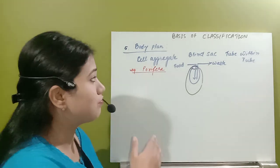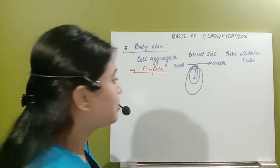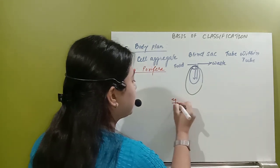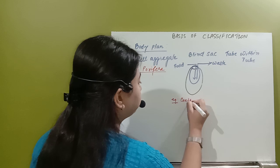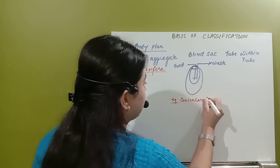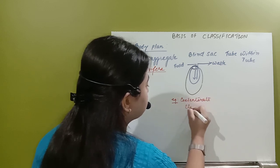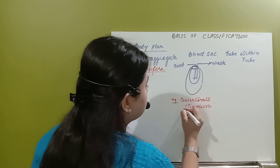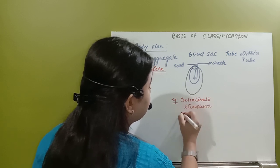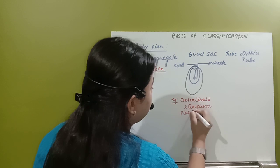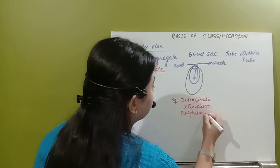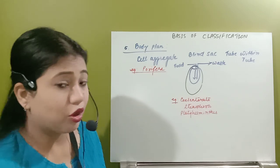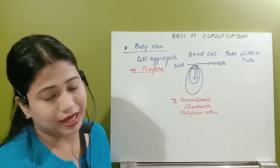How many types of organisms have this blind sac body plan? Blind sac body plan is going to be present in case of cnidarians, then ctenophores, and the next one is platyhelminthes. In case of platyhelminthes too, the body plan will be blind sac.